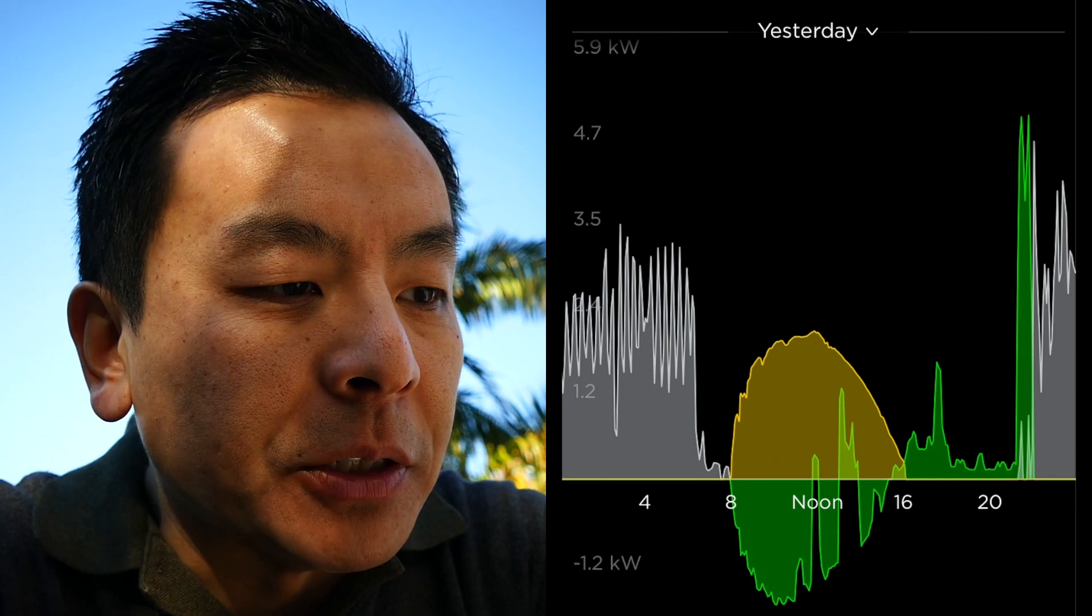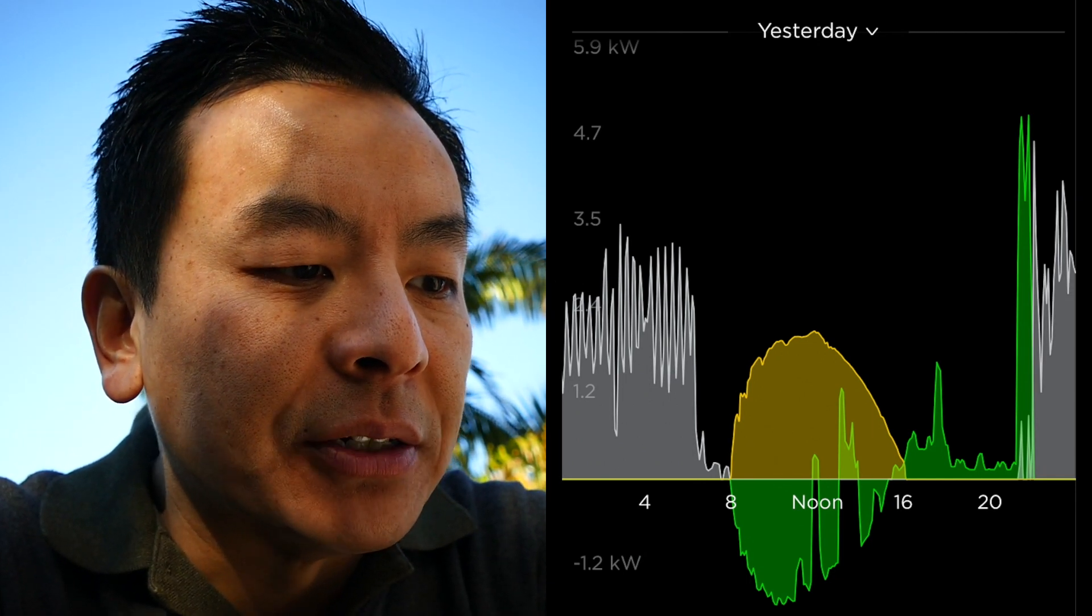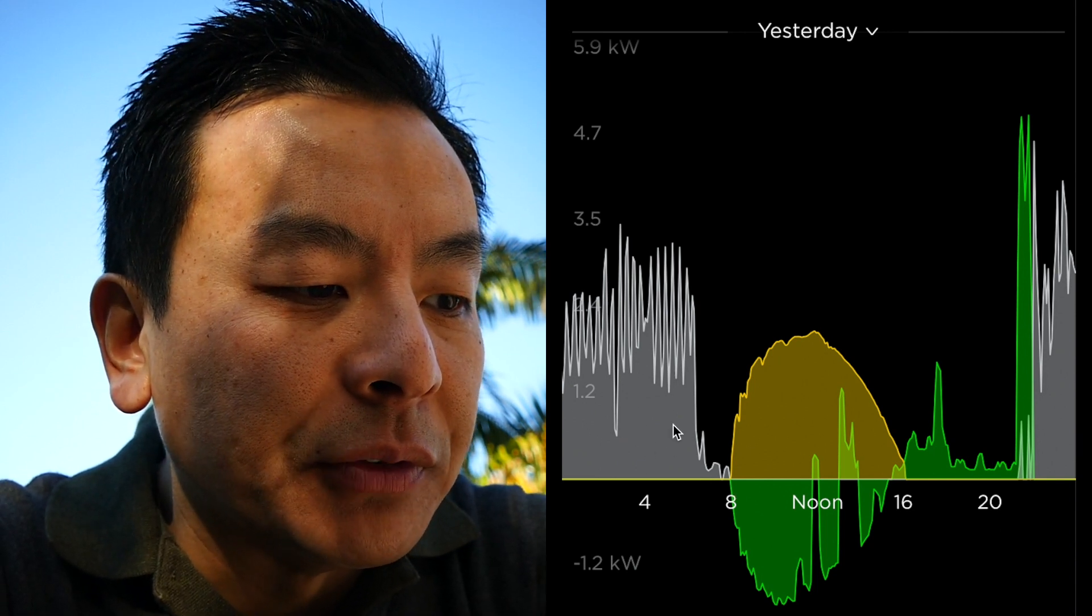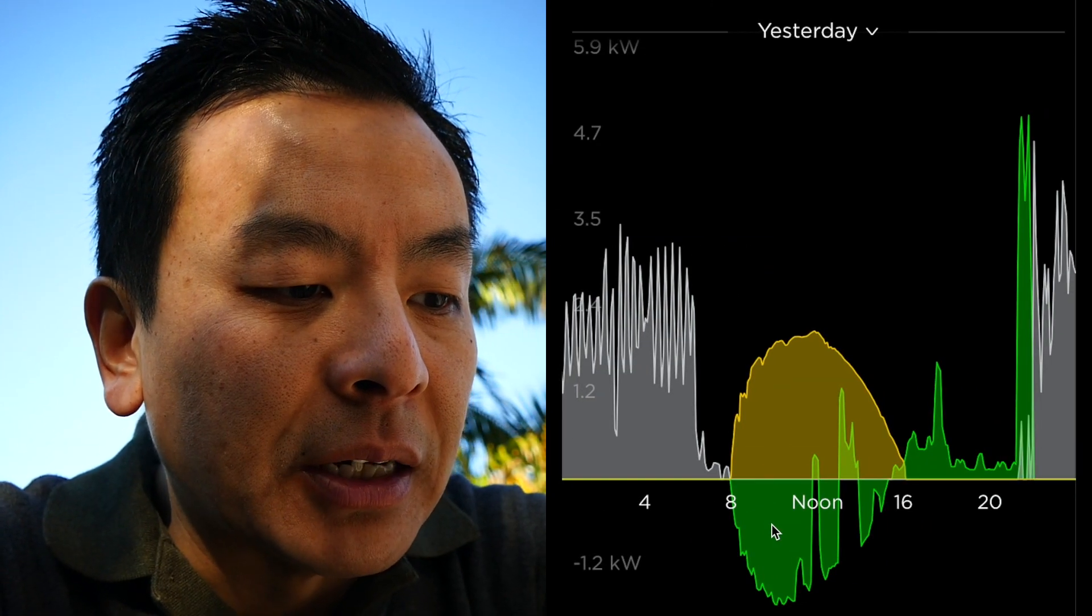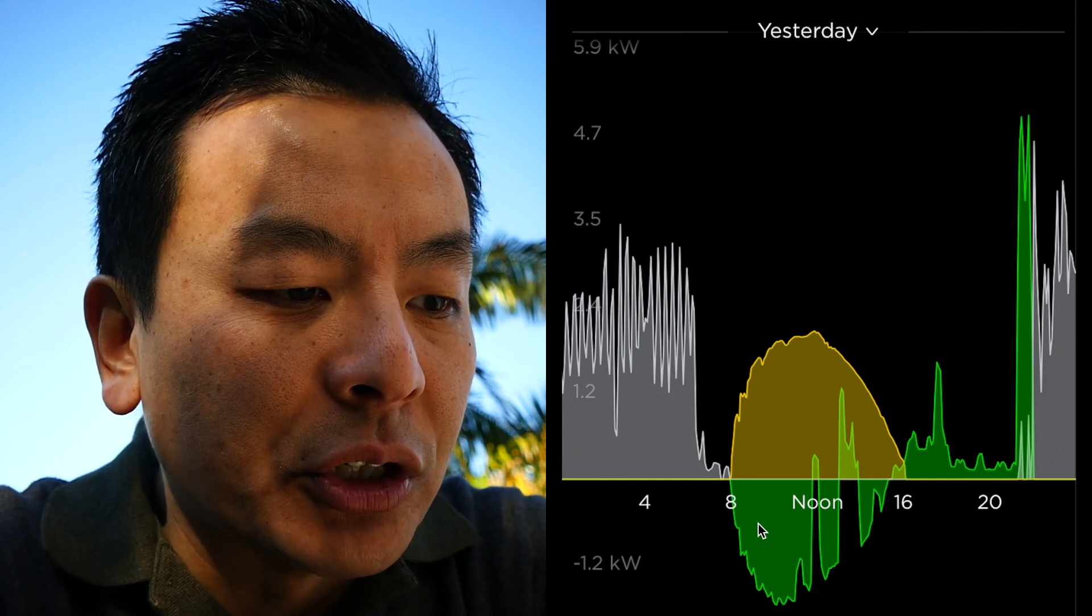So let's have a look at the Powerwall 2 data from a couple of days ago. As you can see here, this is about as good as it gets in winter here in Sydney. The grey areas represent the energy I've used from the grid at night time and in the early morning. The green represents the Powerwall 2, what it's charging and discharging.